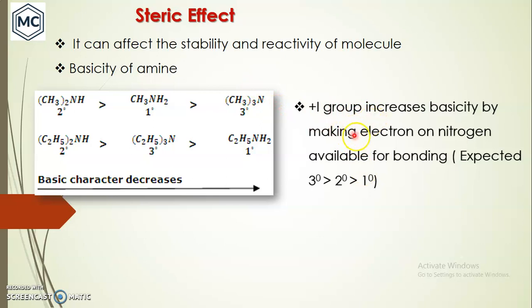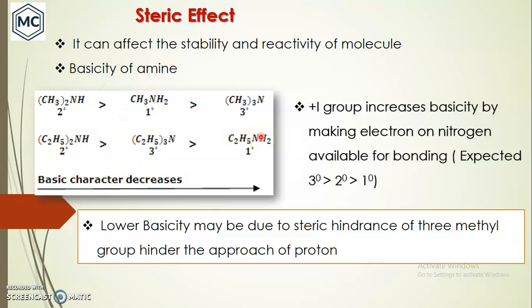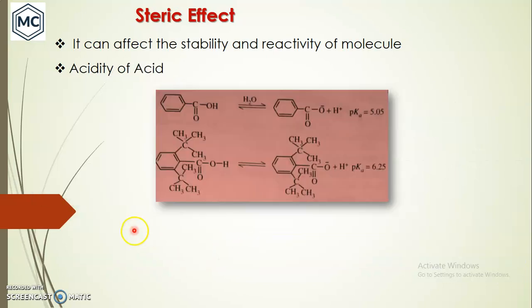In a tertiary amine you have three +I groups, so we would expect the basic order to be: tertiary > secondary > primary. But the observed order is different. The lower basicity of the tertiary amine may be due to the steric hindrance of the three methyl groups, which can hinder the approach of a proton. There are other reasons also, such as hydration effect and stability of the conjugate acid, but here we focus only on the steric effect.